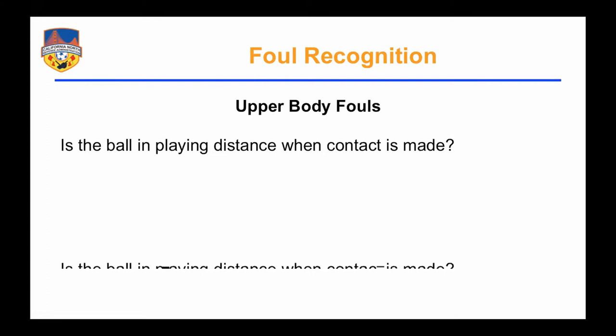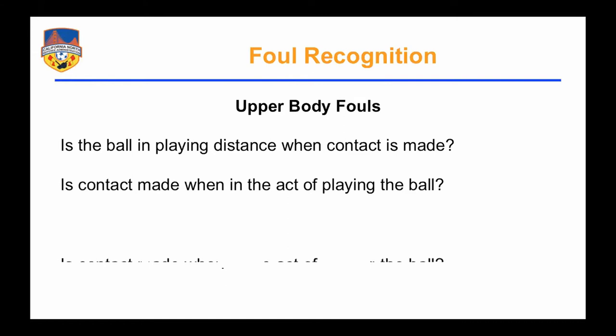The first is: is the ball in playing distance when contact is made? You'll remember that from the discussion we had about a lower body foul with Tobin Heath in an NWSL game a couple of weeks ago. The factor of whether the ball is in playing distance when contact is made is actually really important when we talk about upper body challenges, because we're going to see some clips where we need to discern if the contact between the opponent and the challenger is fair or not in relation to when the ball is close by. Is contact made when in the act of playing the ball? This is an important distinction — are they trying to play the ball, or are they going out of their way to create contact with the opponent?